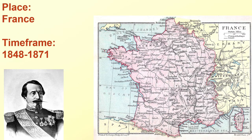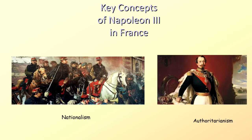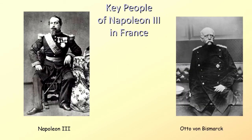The place is France, and the time frame is 1848 to 1871. Key concepts: Nationalism and Authoritarianism. Key people: Napoleon III and Otto von Bismarck.